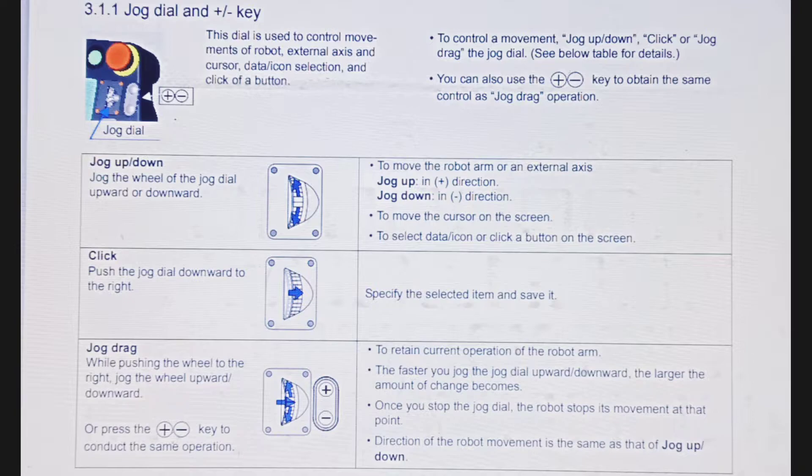Or press the plus/minus key to conduct the same operation. To retain current operation of the robot arm, the faster you jog the jog dial upward or downward, the larger the amount of change becomes.